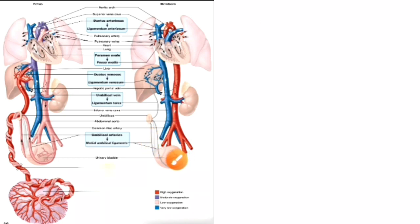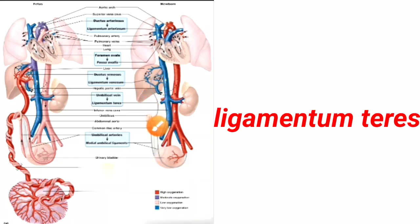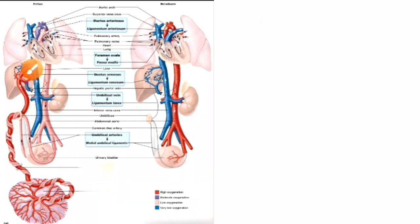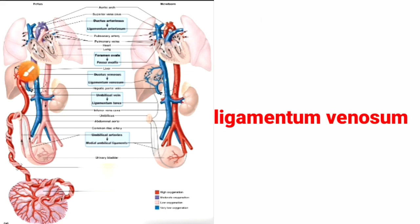Closure of the umbilical vein follows the same reason, but it takes more time for obliteration than the umbilical artery. After obliteration it becomes the ligamentum teres in the body. Next is closure of the ductus venosus — which connects the umbilical vein and inferior vena cava. Due to obliteration of the umbilical vein, blood flow toward the ductus venosus decreases, causing it to collapse and form the ligamentum venosum. It mostly constricts within three to seven days.